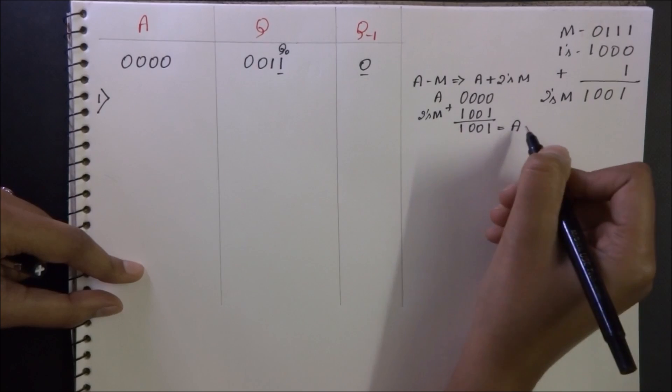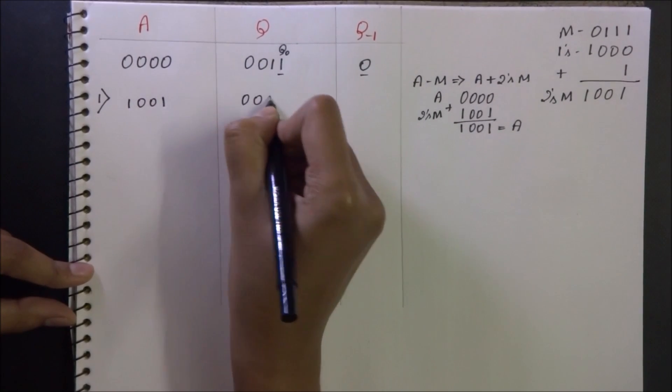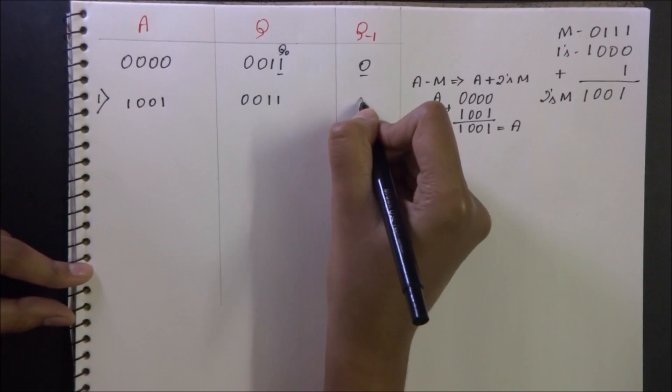This is the new value of A, 1-0-0-1. And Q remains the same. Q-1 is also same, 0.